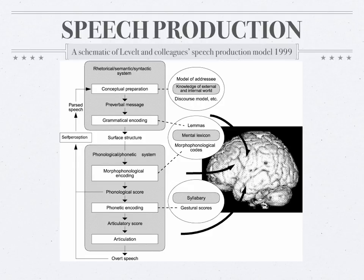During phonetic encoding, the speech production system consults a set of stored representations of specific syllables. The system activates the appropriate syllable representations and places them in the appropriate positions in the frame. This preparation is used by the motor system to create the phonetic gestural score, which is the representation used by the motor system to plan the actual muscle movements.